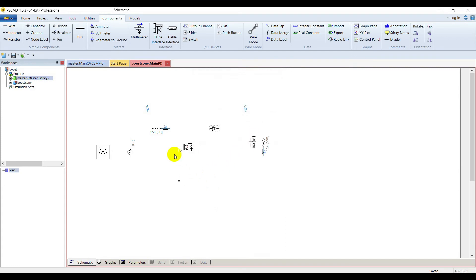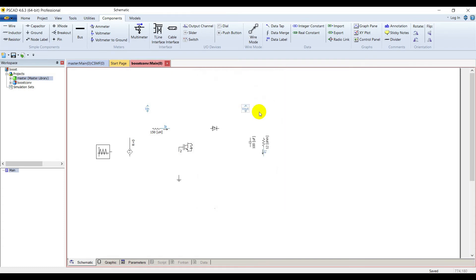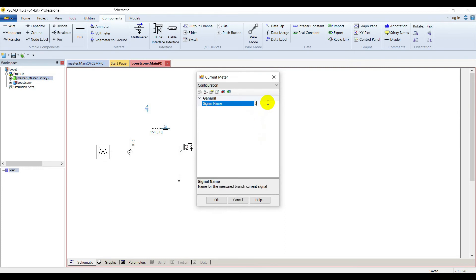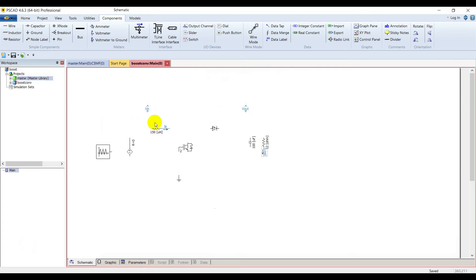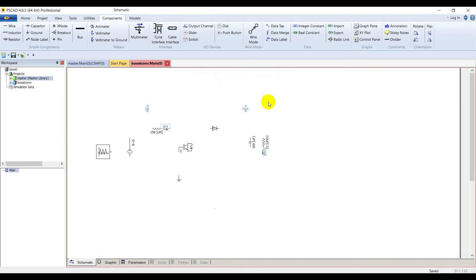We are not needing snubber circuit in the diode. Name this meter as V in. This one is V out. It's I load. This is I inductor.